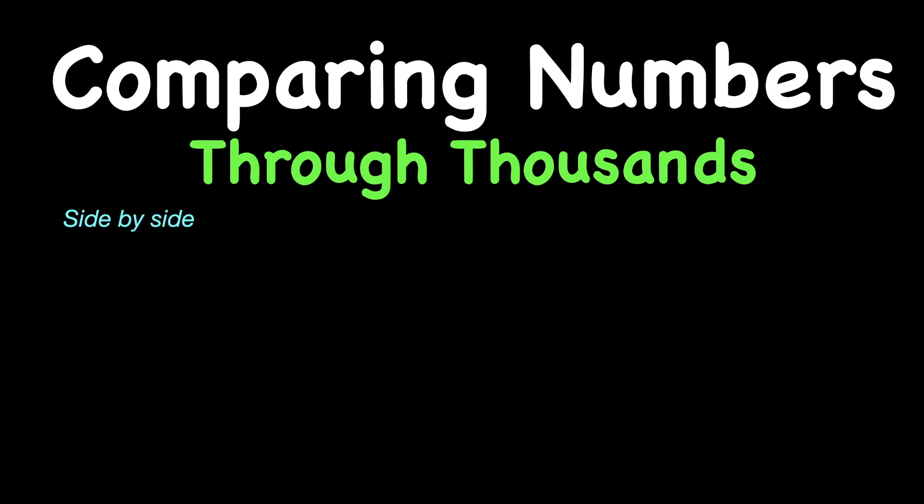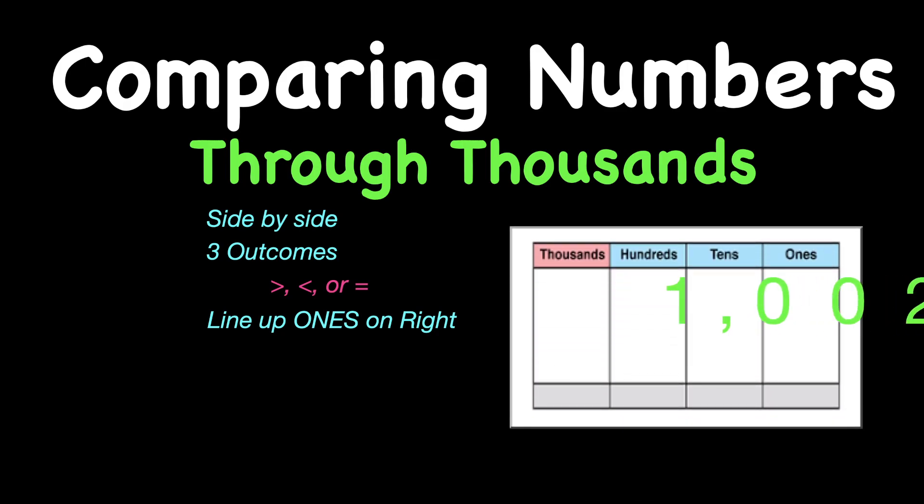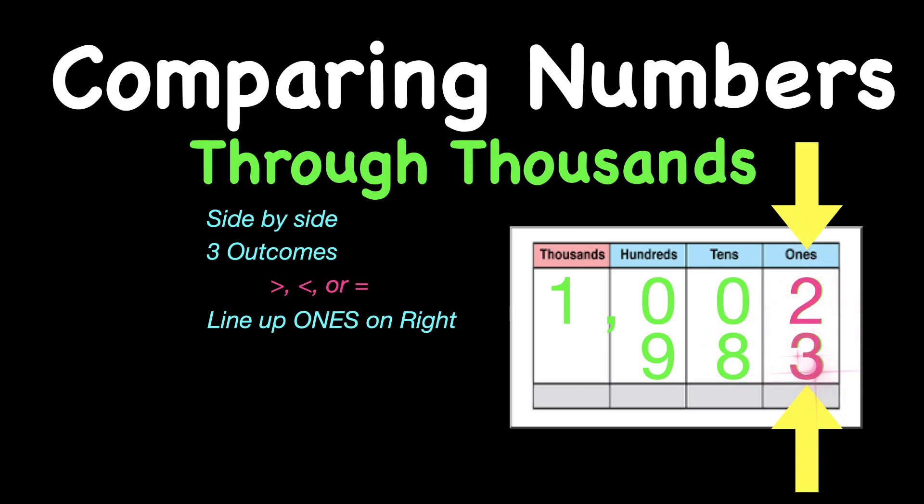So in review, we're comparing numbers through thousands today. Remember, comparing just means side by side. Three outcomes, greater than, less than, or equal to. Make sure that you line up the ones. It's probably one of the most important takeaways today. So again, your ones need to be lined up. And if they're lined up, everything will be lined up. Don't forget to put in placeholders, either actually do it or with your imagination.